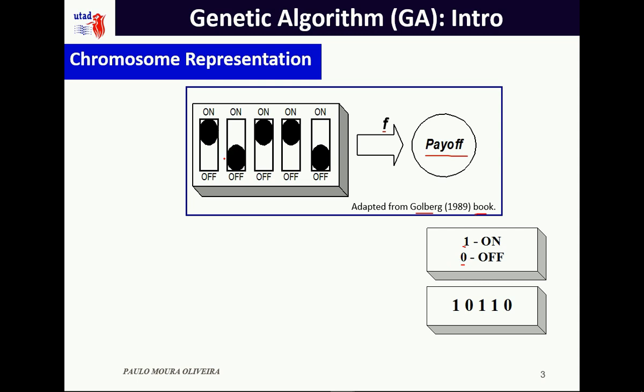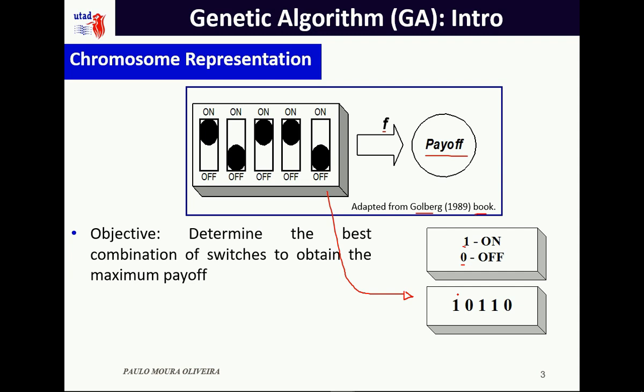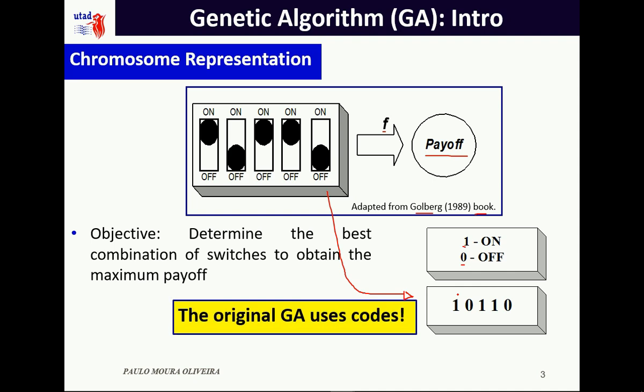This potential solution seen in the figure is represented or encoded by the binary string: 1, 0, 1, 1, 0. This is also one of the distinguishing features of GAs — the original GA operates on codes. We are going to see an example of how this works.